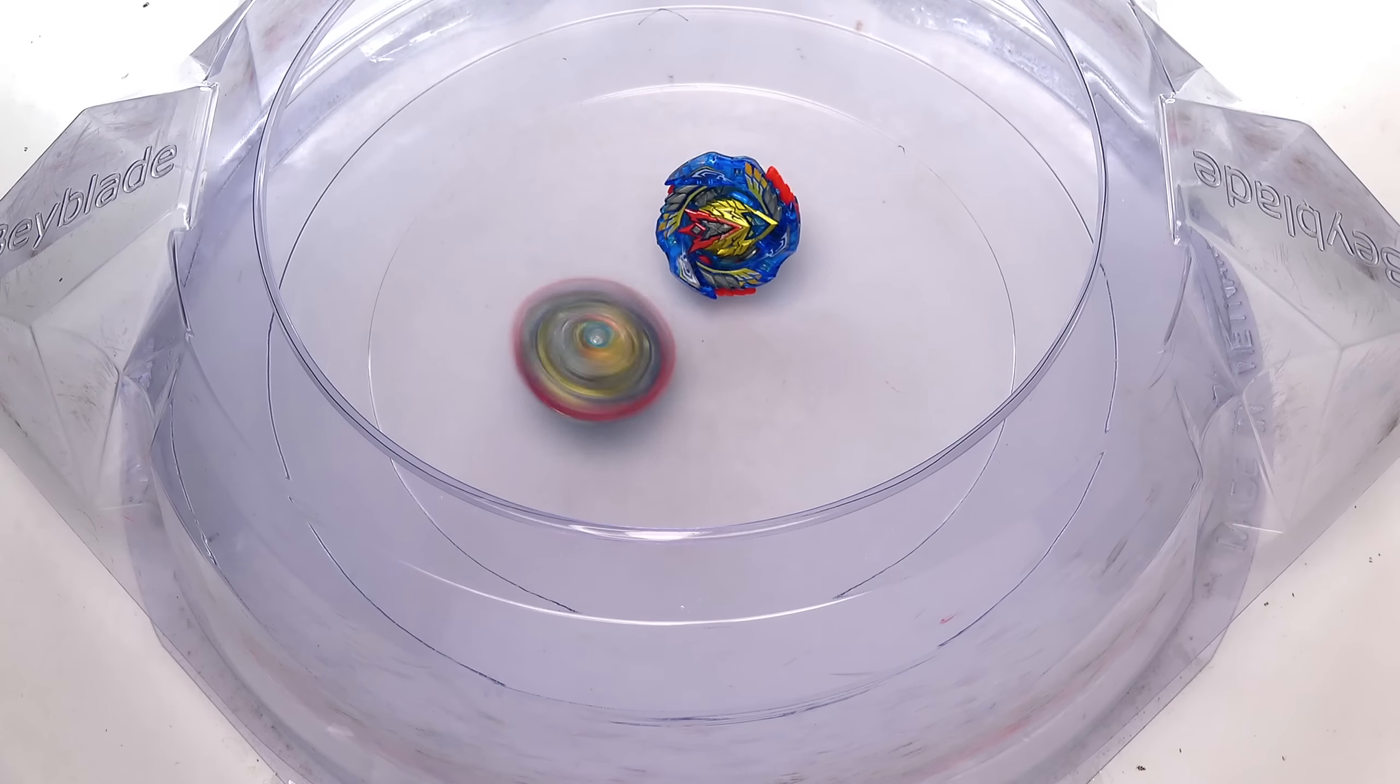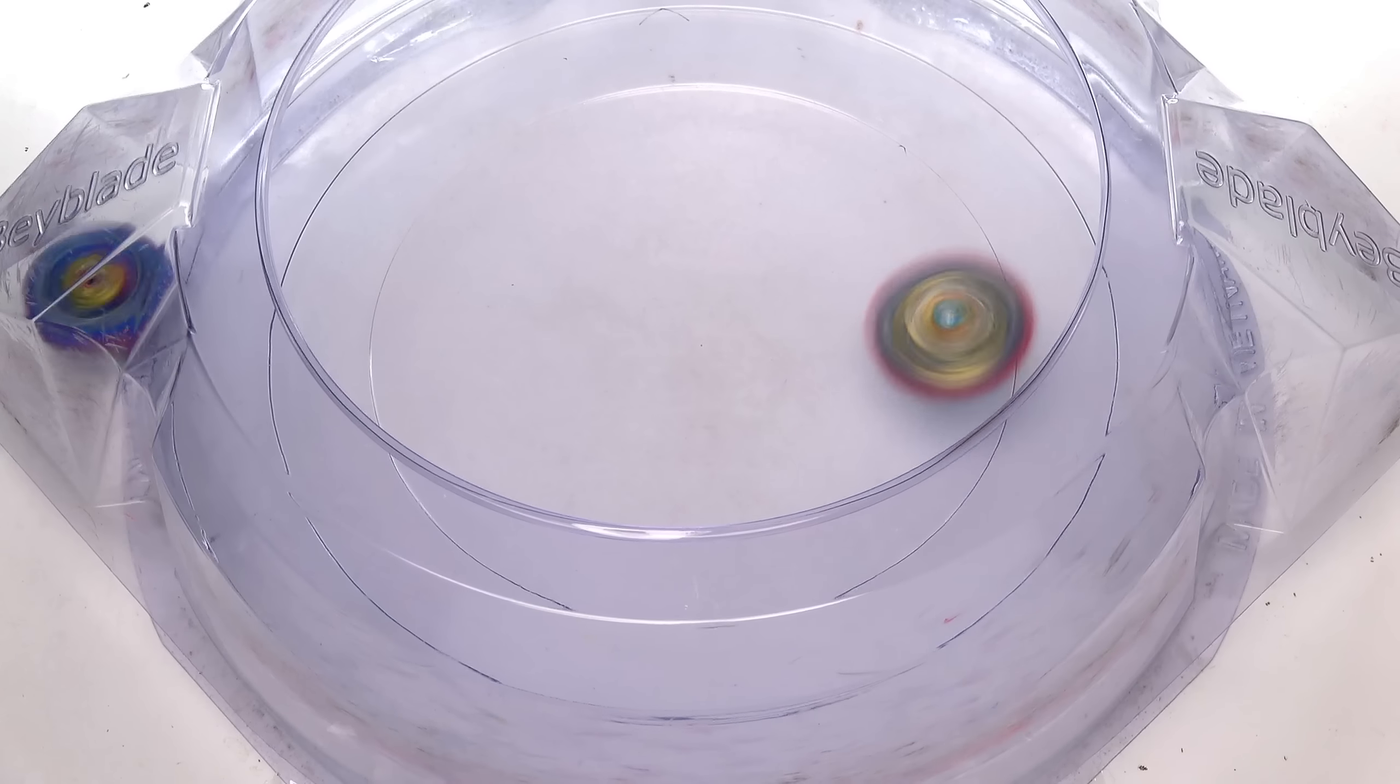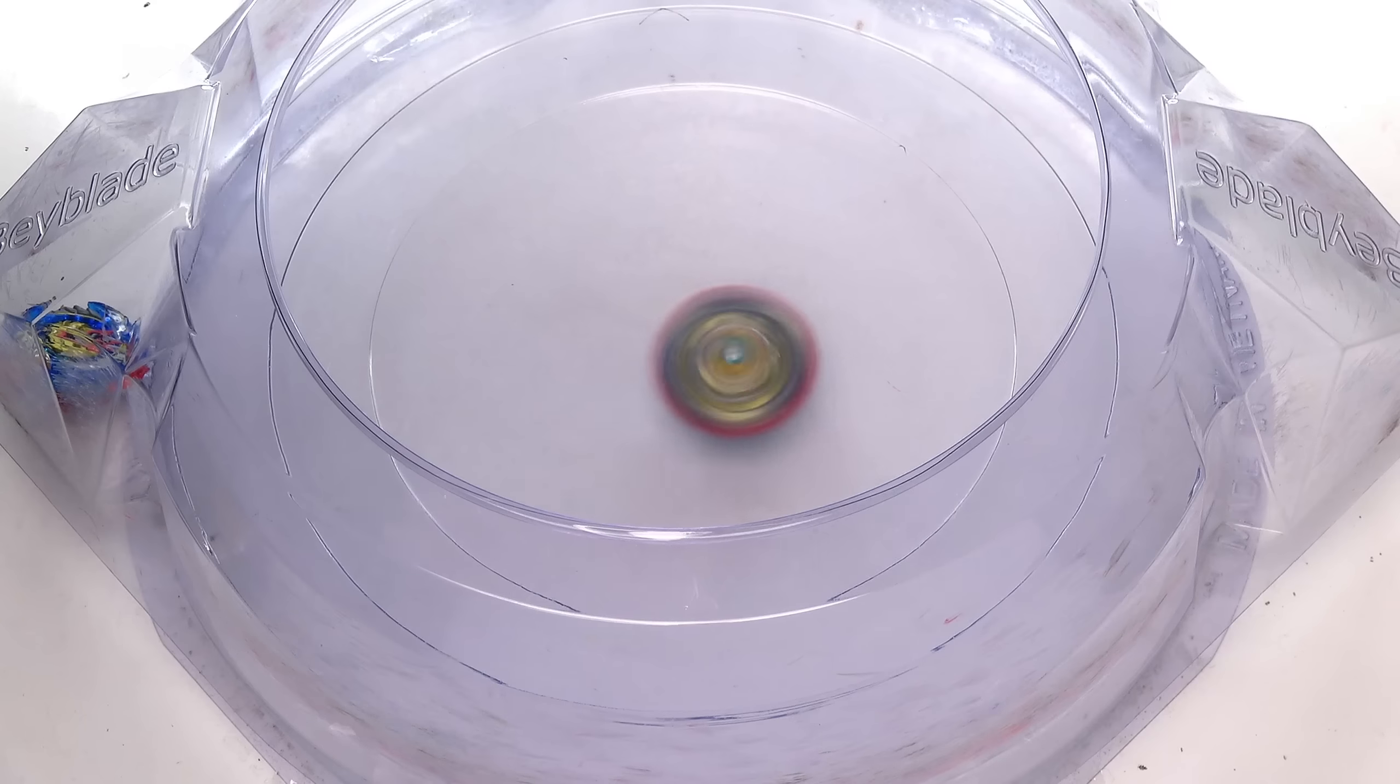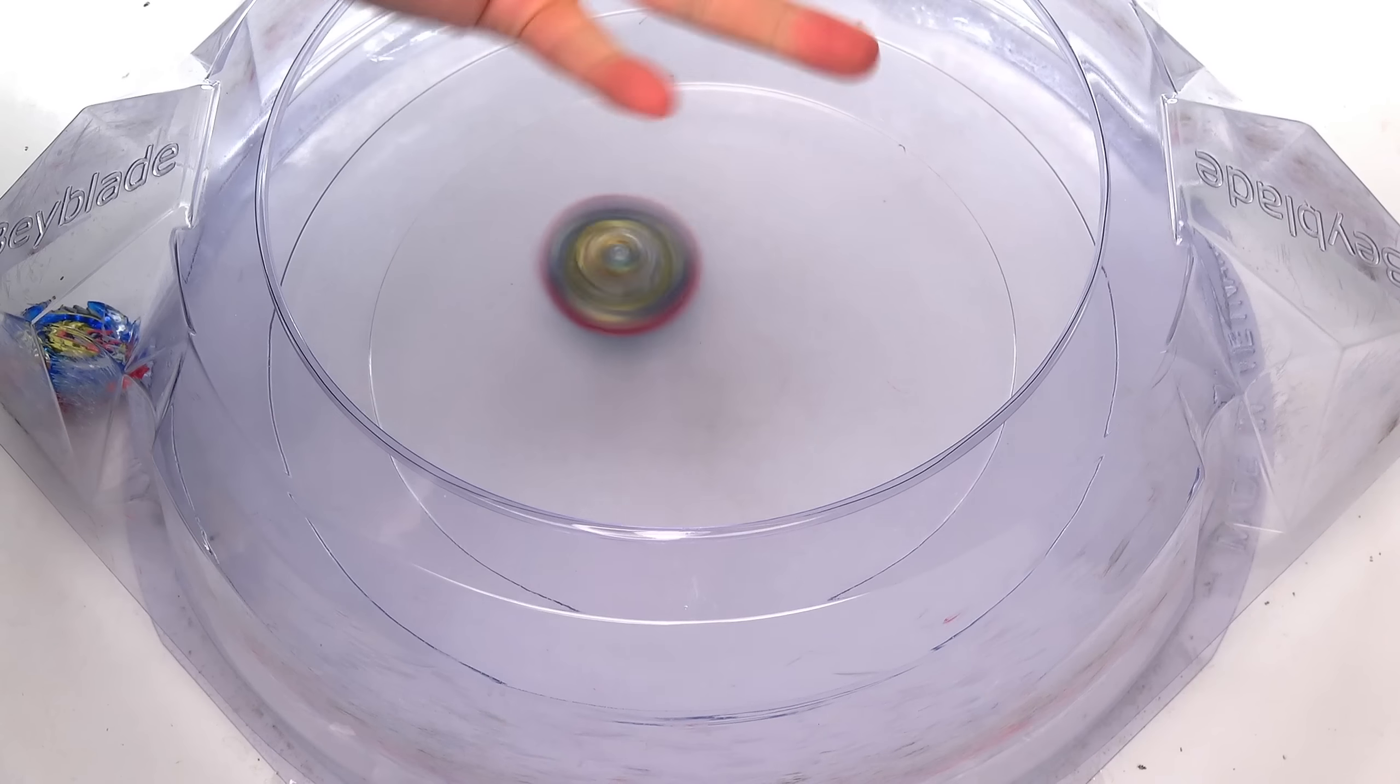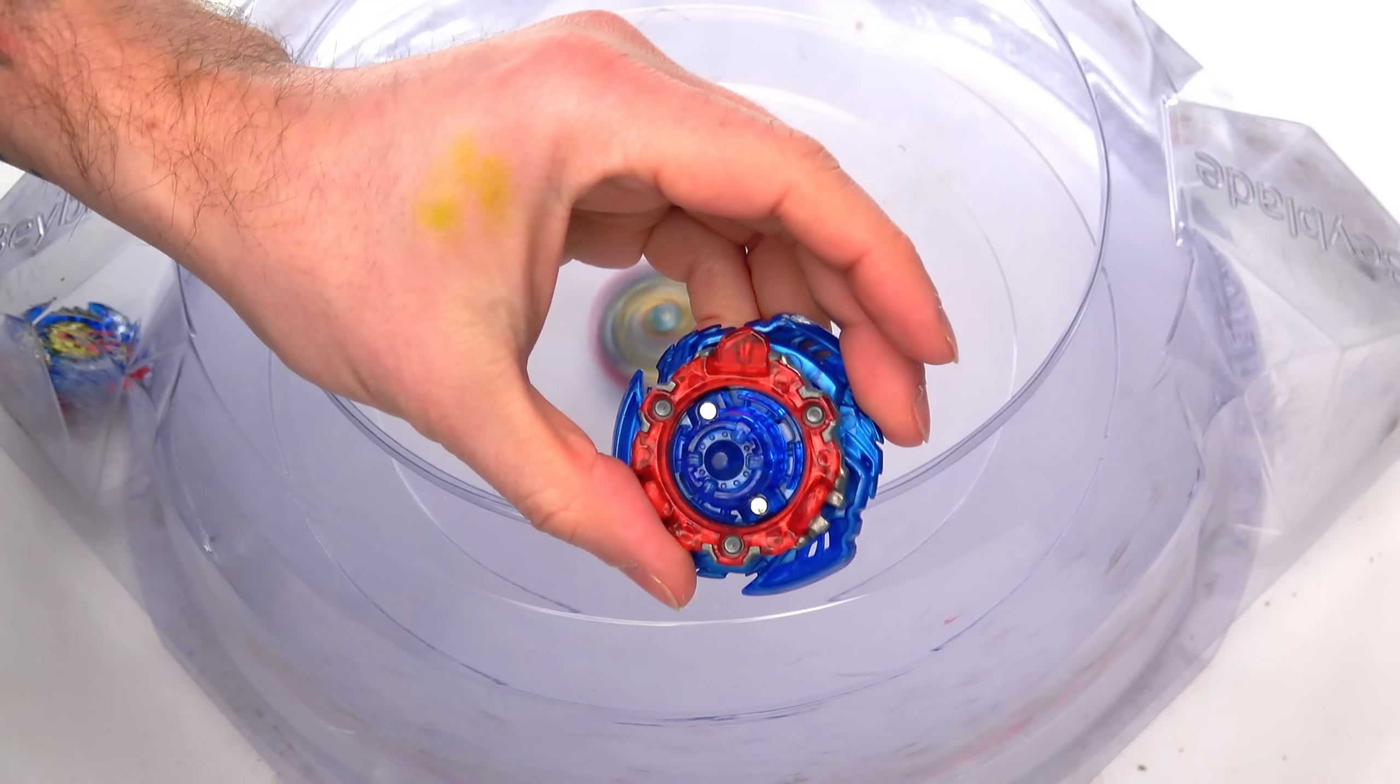3, 2, 1... All right guys and here we go. This is where the speed actually will help out Valkyrie. Oh man, no guys. Every time on the last point it always knocks the other beyblade out. That is absolutely insane.